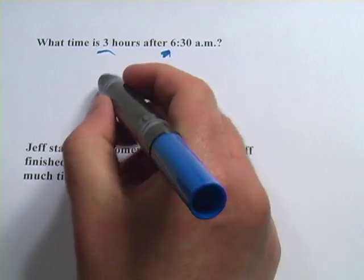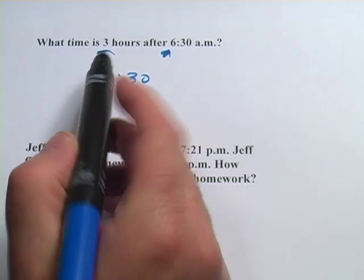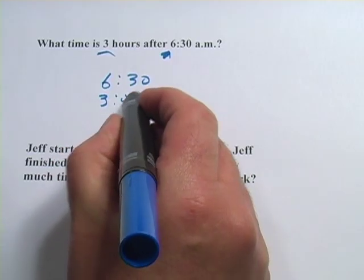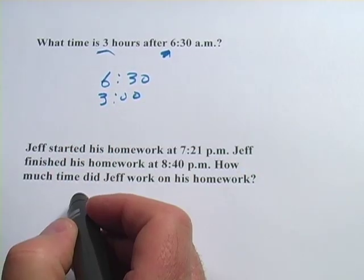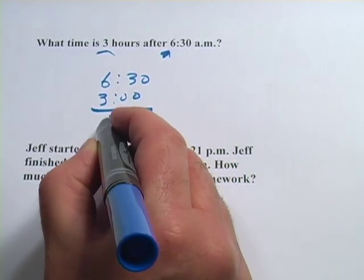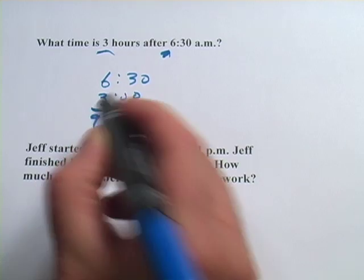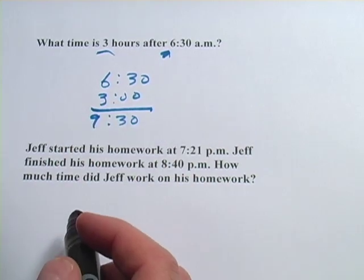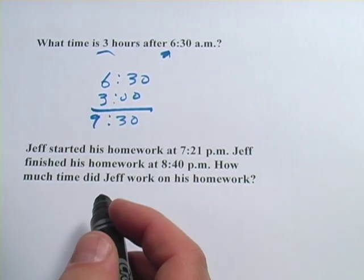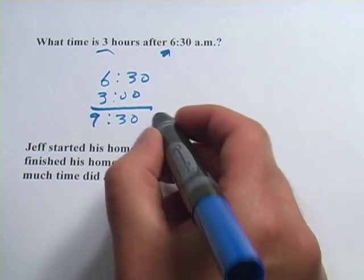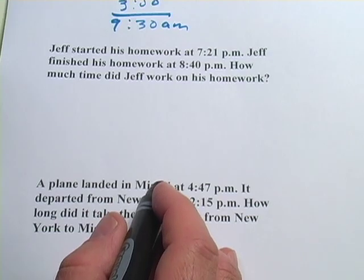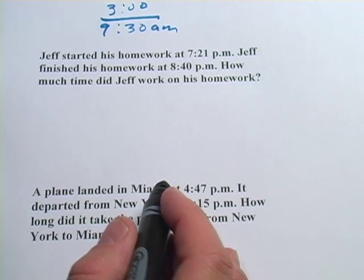You just have to make sure when you're adding, you know where to put that three. Three hours and no minutes would look like that. And if you add that together, you would get 9:30. And that makes sense — if you get up at 6:30 a.m., three hours later it's going to be 9:30 a.m.